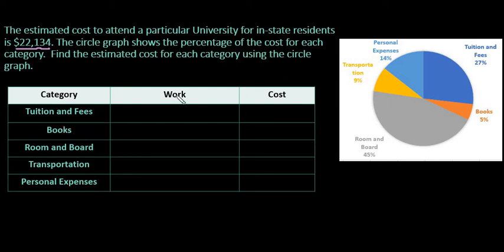So our work: basically what we're going to do is go to each of our categories. The first one we're going to look at is tuition and fees. So I'm going to come over here and find tuition and fees. The tuition and fees is 27%. So if I take this, the 27% and write it as a decimal would be 0.27, and then I would multiply that by 22,134. If I multiply this out, 0.27 times 22,134 gives me an approximate cost of $5,976.